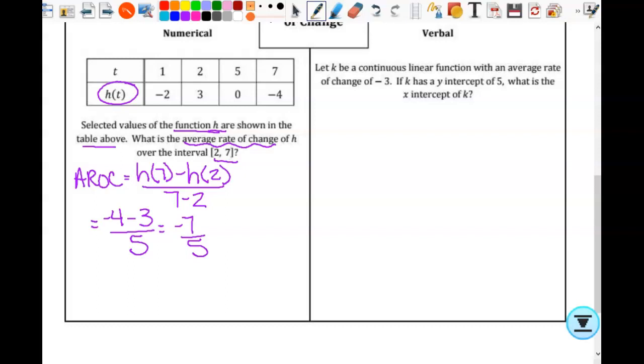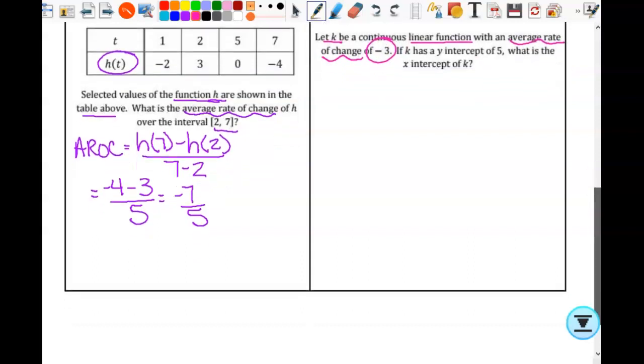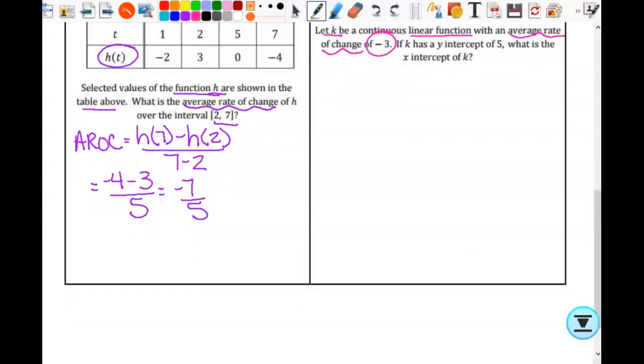All right. So then here we have that K is a continuous linear function with an average rate of change of negative 3. Tell me something about the average rates of change of a linear function. They're the same. They're constant. It's the slope, but it's constant, right? So the average is just always the same on those.